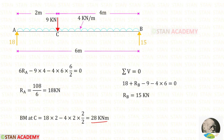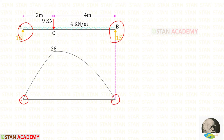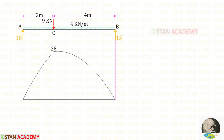Using this value we can draw the bending moment diagram. In the points A and B the moment is 0, and at point C we have found the moment to be 28 kNm. Since there is a uniformly distributed load for the full span, the diagram should be in a parabolic shape.